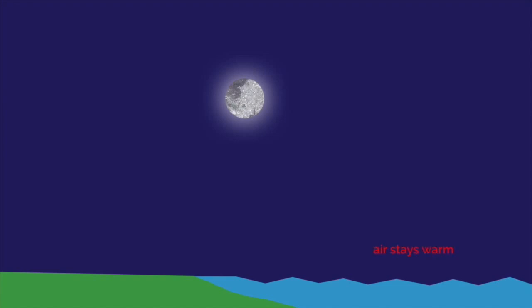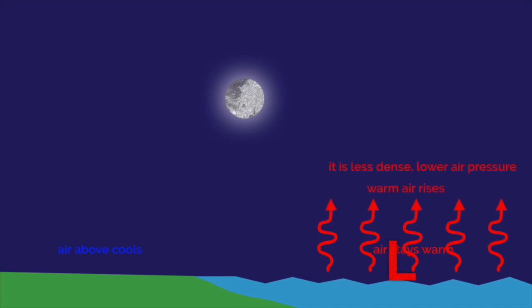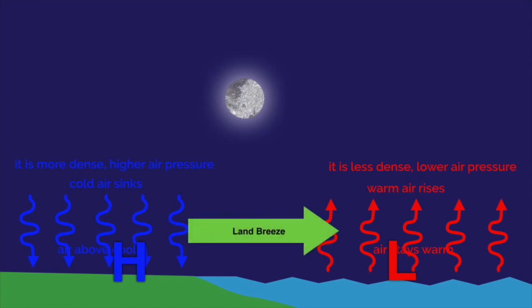The air over the water now is going to be warm, and the air over the land is going to be a little bit cooler. As a result, the air over the water is going to be rising — it's going to be less dense, and therefore have lower air pressure. And the air above the land is going to be much cooler, and therefore it's sinking, more dense, and therefore has a higher air pressure. This creates a high-to-low situation, only it's the opposite from what we saw during the day. This is now called a land breeze. Air is flowing from high pressure to low pressure.